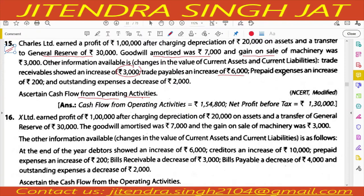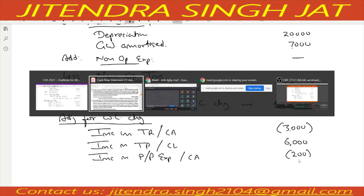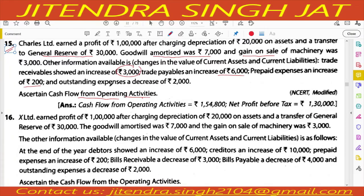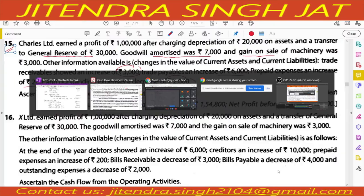Prepaid expenses increased Rs. 200 — prepaid expenses are current assets, so an increase means outflow of cash: Rs. 200 subtracted. Outstanding expenses decreased Rs. 2,000 — outstanding expenses are current liabilities, and a decrease in current liability means outflow of cash: Rs. 2,000 subtracted.